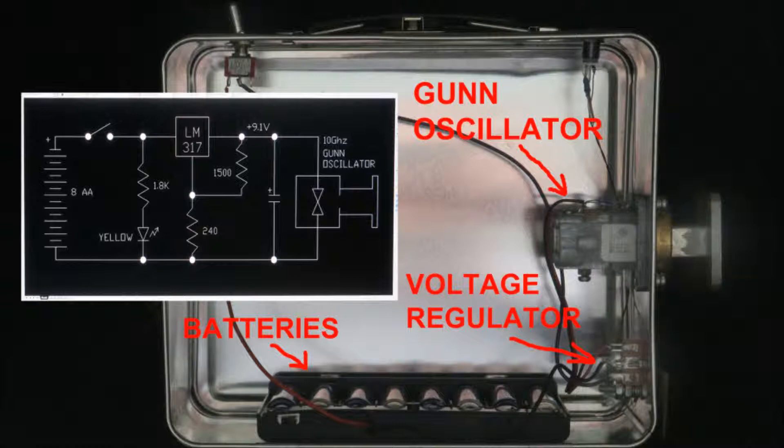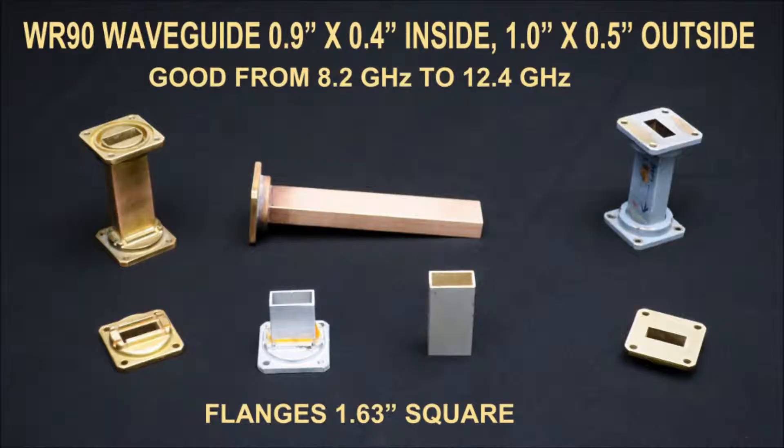Waveguide is a transmission line commonly used for microwave frequencies as it is very low loss. Waveguide for X-band is fairly common on the surplus market and is designated WR-90.